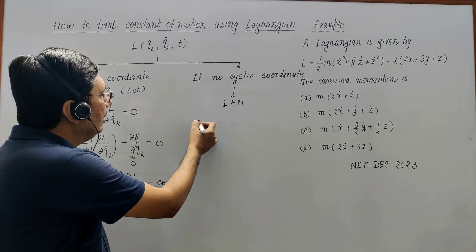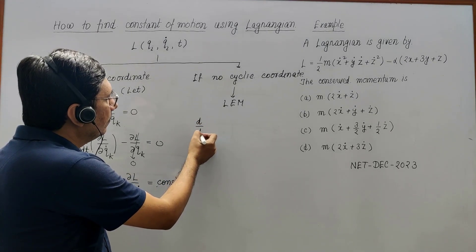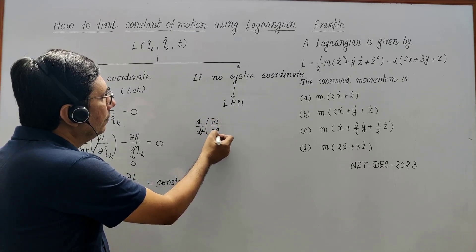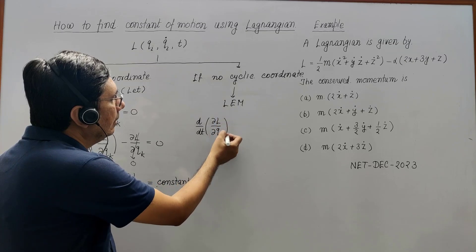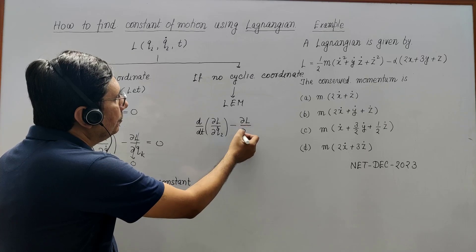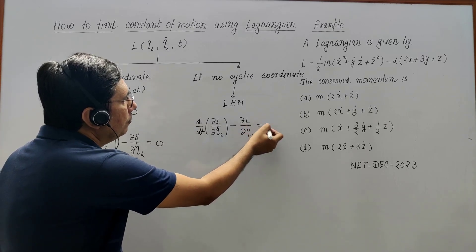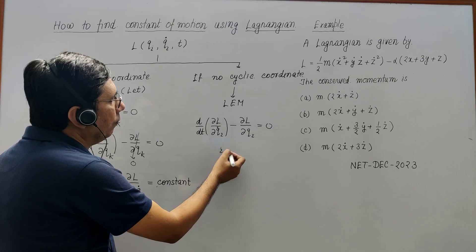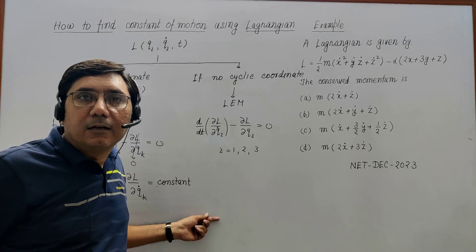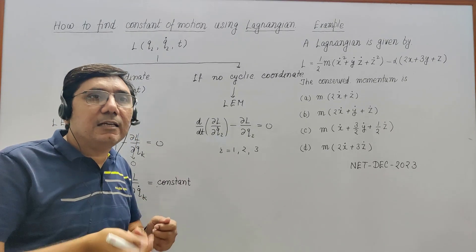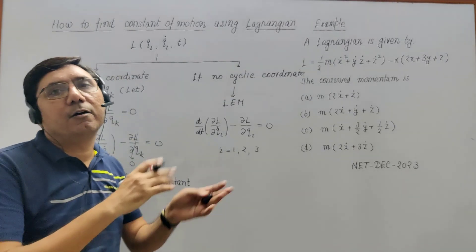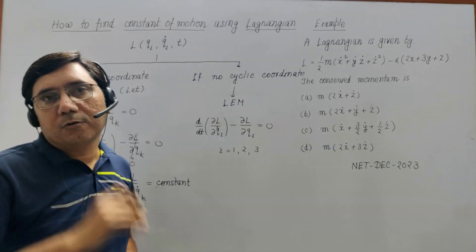Write: d/dt(∂L/∂q̇ᵢ) − ∂L/∂qᵢ = 0, for i = 1, 2, 3. You will have three equations. Then with the help of algebraic manipulation of these three equations, you can always find out the quantity that will remain conserved throughout the motion.